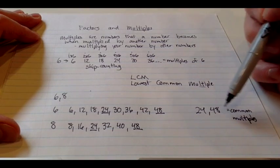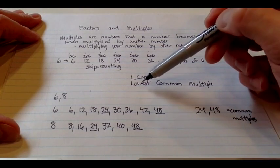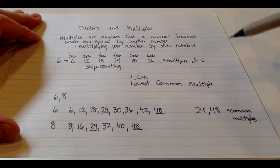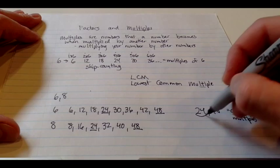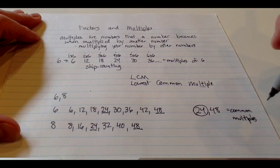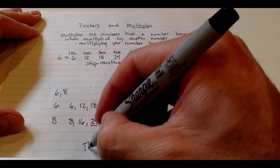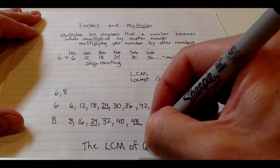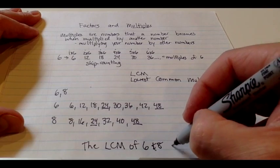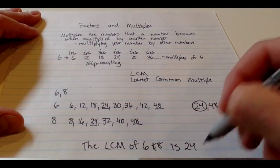Now that's not entirely everything I need to do. It's also asked me for the lowest of them. When looking for the lowest common multiple, looking for the smallest number of all of the common multiples. So the lowest common multiple of 6 and 8 is 24.